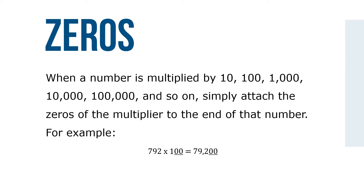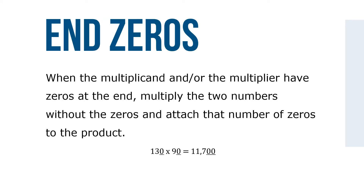When a number is multiplied by 10, 100, 1,000, 10,000, 100,000, and so on, simply attach the zeros from the multiplier to the end of that number. For example, 792 times 100 — two zeros — is 79,200. When the multiplicand and/or the multiplier have zeros at the end, multiply the two numbers without the zeros and attach the number of zeros to the product. For example, 130 times 90 equals 11,700.